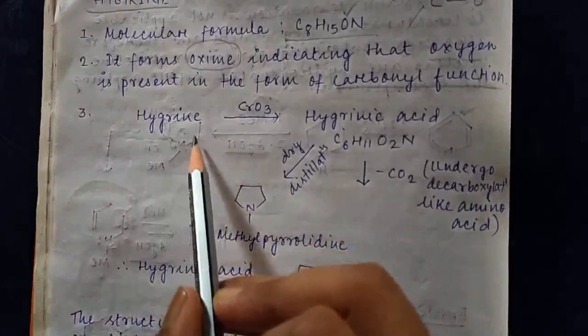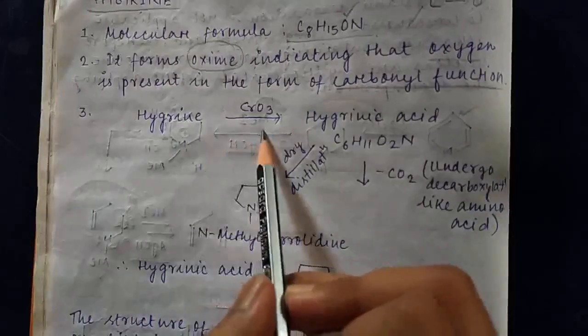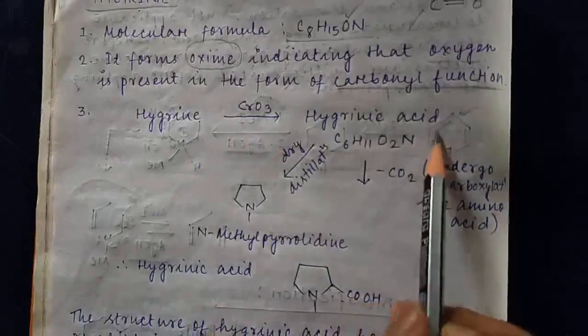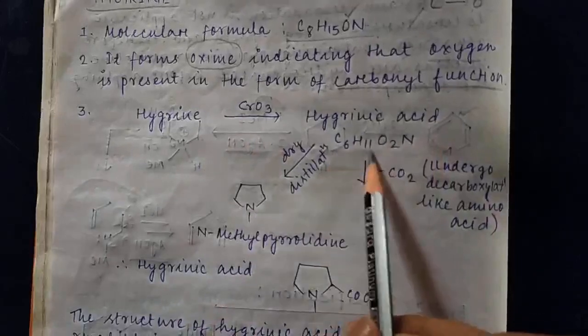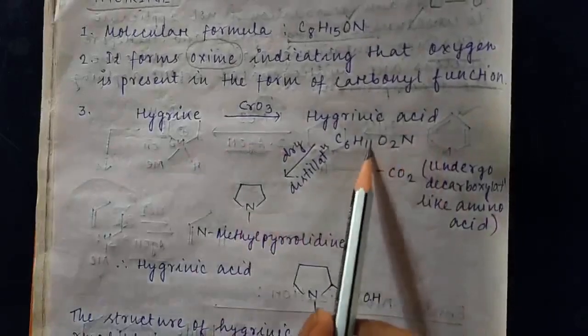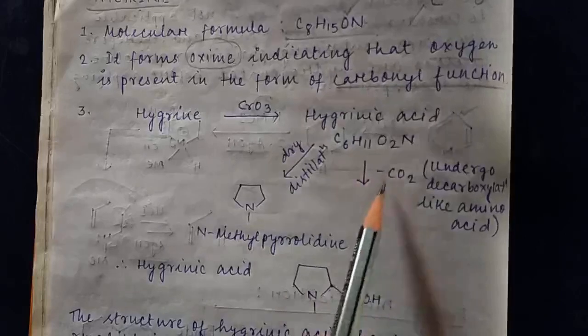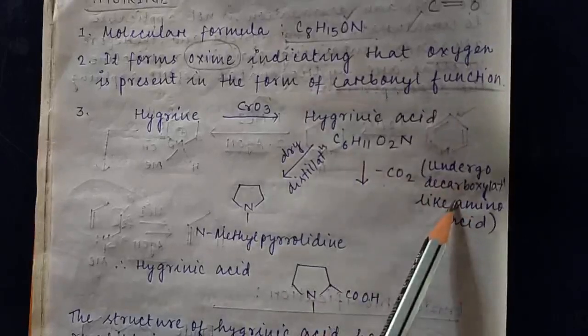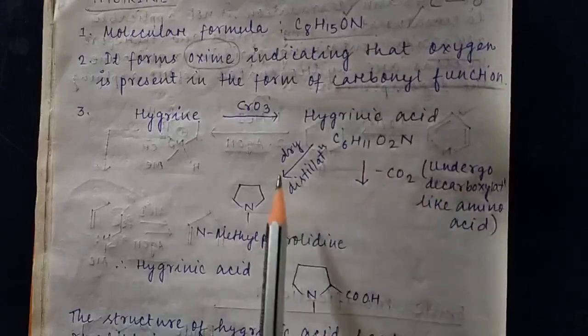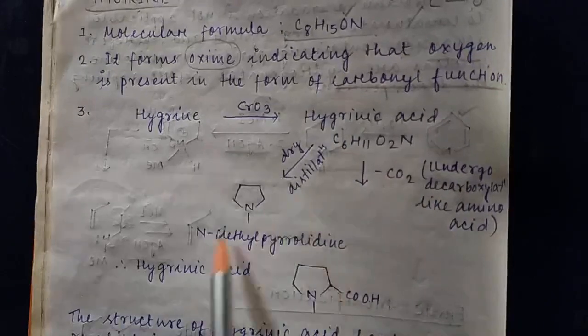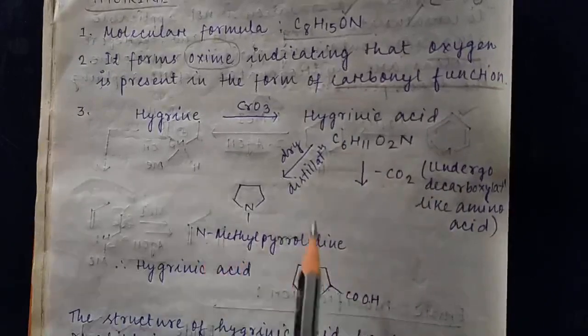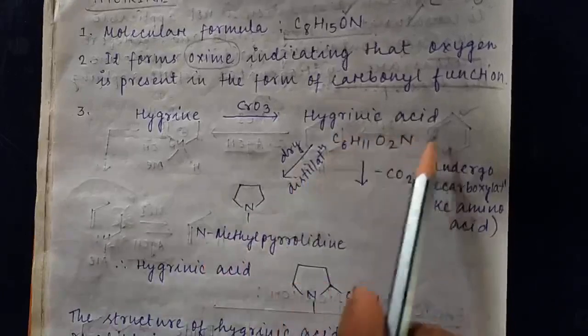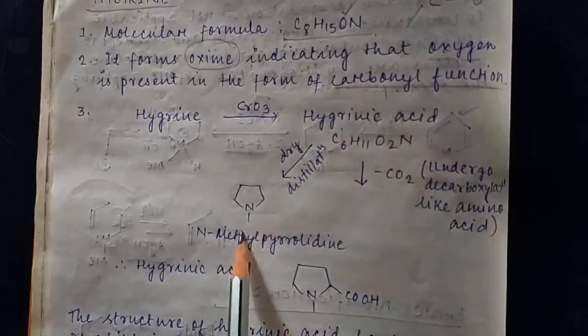When hygrine is oxidized with CrO3, it forms hygrinic acid having the formula C6H12O2N. This hygrinic acid upon decarboxylation behaves like an amino acid, and upon dry distillation it forms N-methylpyrrolidine.